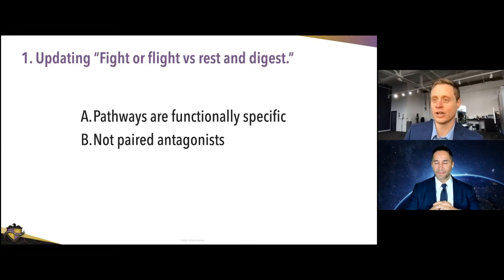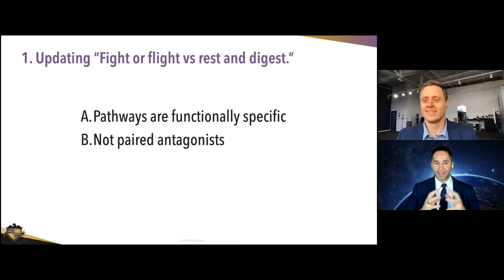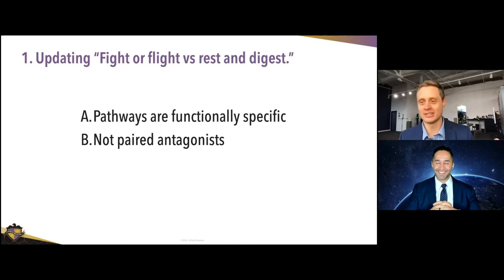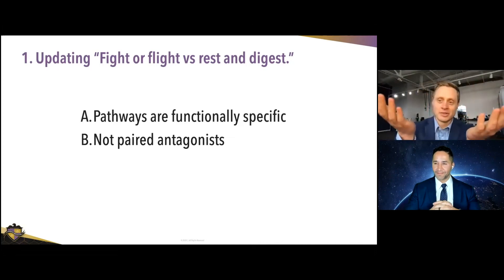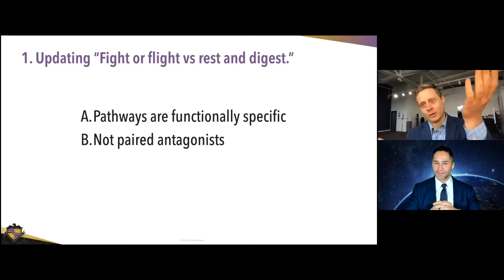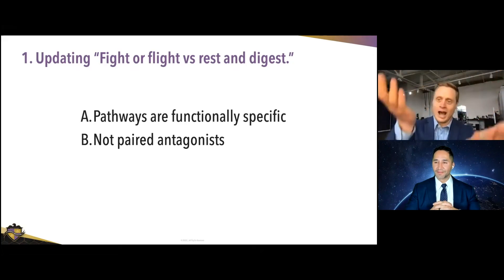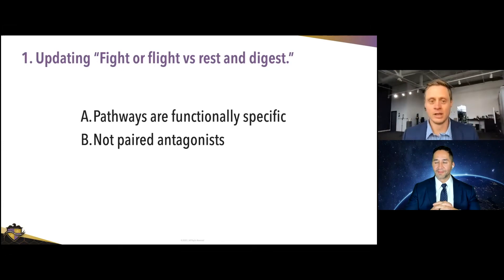The second concept that always comes up is paired antagonism — the idea that the sympathetic and parasympathetic systems work like a seesaw: if one goes up the other goes down, working in opposition or antagonistically. That is simply not the case.